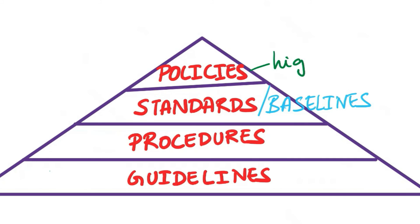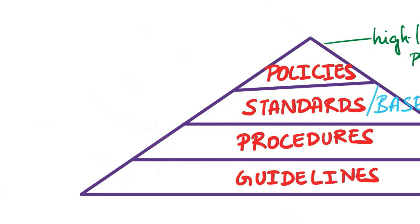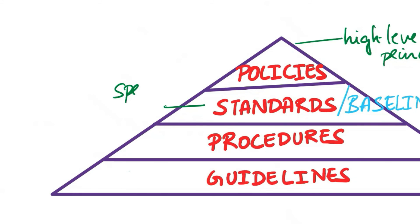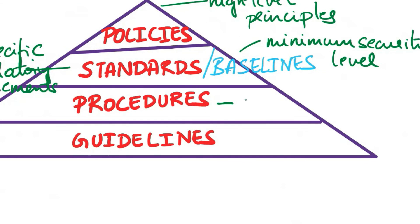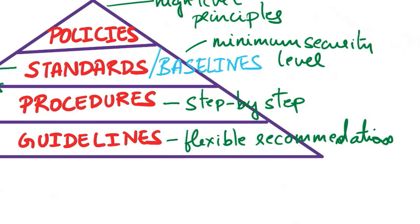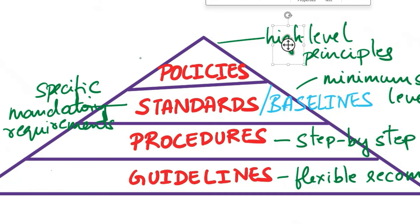In summary, policies are high-level principles guiding decision making, standards provide specific mandatory requirements, baselines set a minimum security level, procedures offer step-by-step implementation details, and guidelines provide flexible recommendations. Together, they form a structured governance framework for information security.